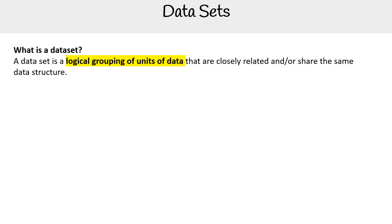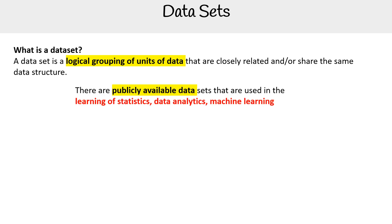Let's define what a dataset is. A dataset is a logical grouping of units of data that are closely related to or share the same data structure. There are publicly available datasets that are used in learning statistics, data analytics, and machine learning.